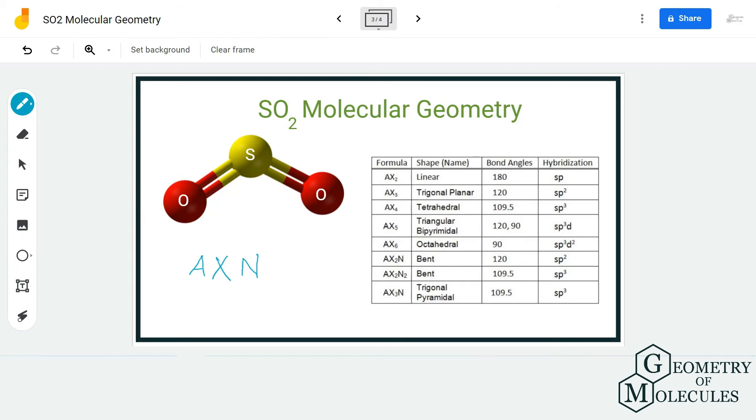Here we have sulfur as the central atom. There are two oxygen atoms forming bonds to sulfur atom, which means we have AX2, and there is one lone pair of electrons, which gives us AX2N1. So the notation is AX2N for SO2.